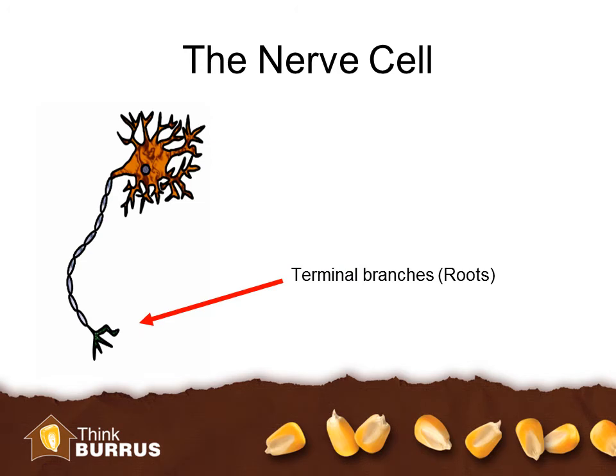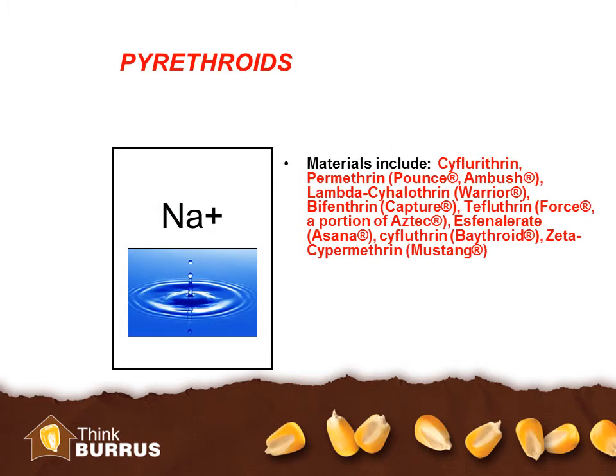Another potential site of activity is that a chemical would disrupt the signal in the neuron at the roots of the nerve cell, what we call the terminal branches — the portion that actively moves a nerve impulse chemically from the cell toward the neighboring cell. Pyrethroids actually disrupt the portion of the cell that is in between the branches and the roots — they mess up the trunk of the neuron. We often refer to these products as sodium channel modulators. Products like Pounce, Warrior, Force, and a portion of Aztec — all registered trademarks — belong to this grouping of insecticides.